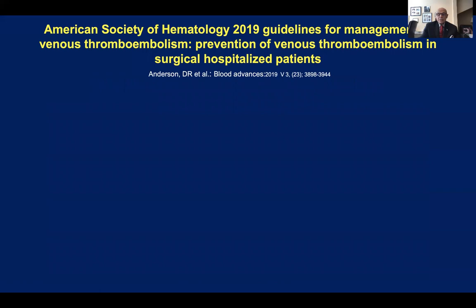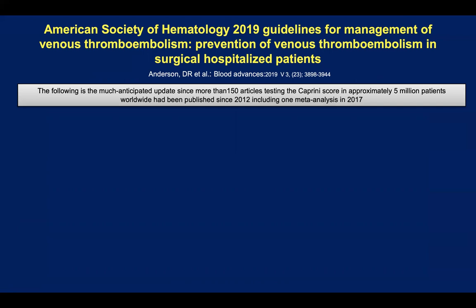In 2019, the next guidelines for surgical patients appeared, and this process has now been taken over by the American Society of Hematology. This was much anticipated by those interested in the score, because at this time over 150 articles testing the Caprini score in approximately 5 million patients worldwide had been published since the original 2012 guidelines, including one very important, very well done meta-analysis in 2017.